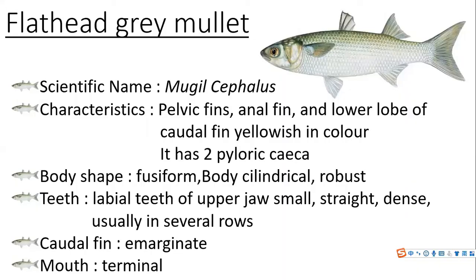First, I want to introduce the flathead gray mullet. The scientific name is Mugil cephalus. The characteristics of the flathead gray mullet are its pelvic fins, anal fin, and lower lobe of the caudal fin are yellowish in color. It also has two pyloric caeca. The body shape is fusiform and the body is cylindrical and robust. The teeth of the flathead gray mullet — the labial teeth of the upper jaw — are small, straight, and dense, usually in several rows. The caudal fin of the flathead gray mullet is emarginate.